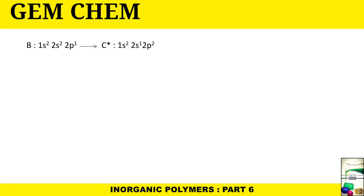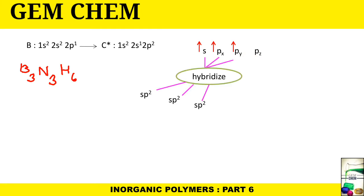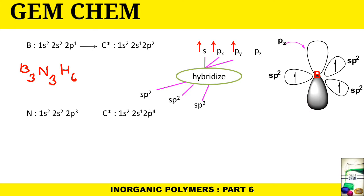Now we'll see for boron and nitrogen so that borazine can be formed. Remember in B₃N₃H₆, basically borazine is B₃N₃H₆, both nitrogen and boron are sp² like benzene. If we consider boron, one of the electrons from 2s will jump into 2p to give 2p². If we focus on the filling of orbitals, this pz will remain empty and they will ultimately hybridize to give three sp² hybridized orbitals.